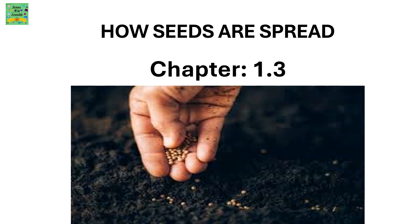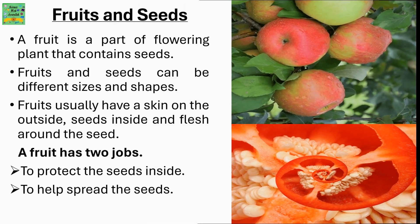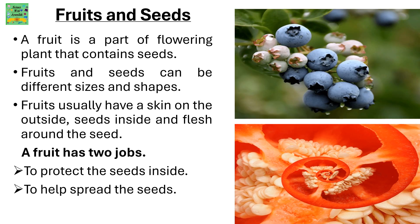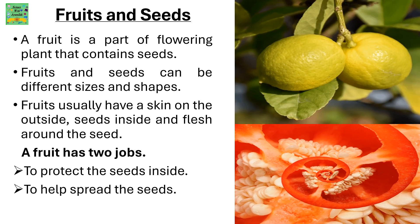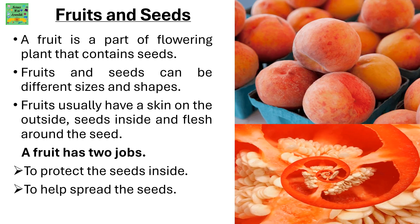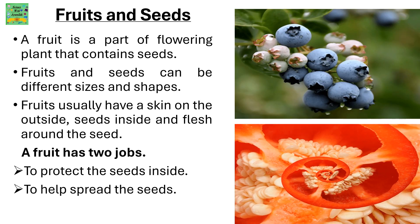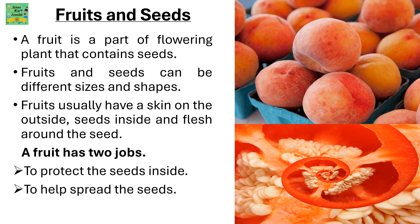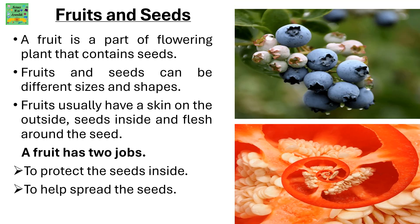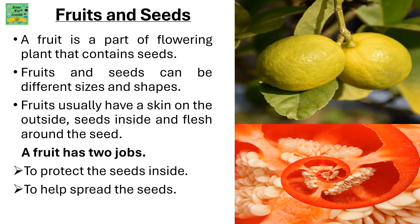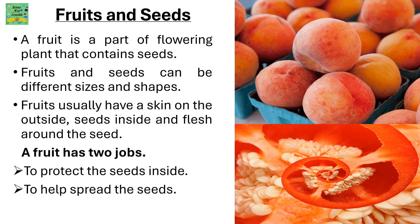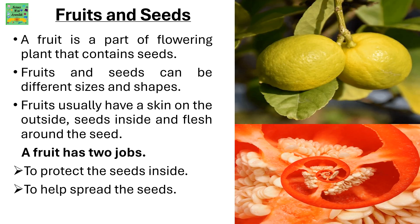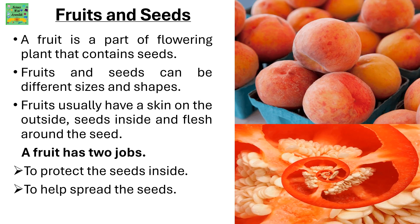How Seeds Are Spread. Fruits and Seeds: A fruit is a part of a flowering plant that contains seeds. Fruits and seeds can be of different sizes and shapes. Fruits usually have a skin on the outside. Seeds are present inside and flesh around the seed. A fruit has two jobs: to protect the seeds inside and to help spread the seeds.